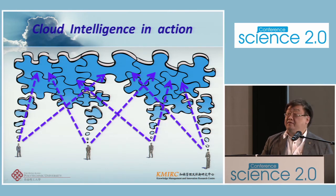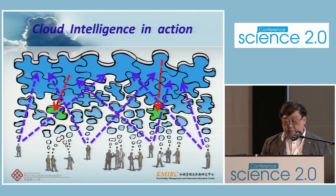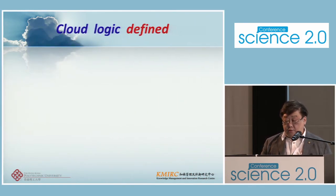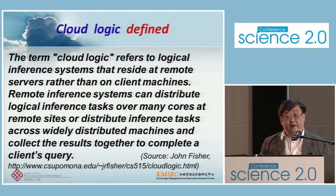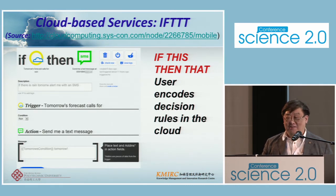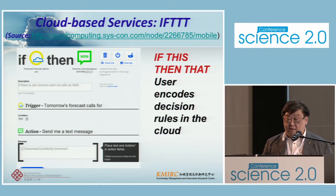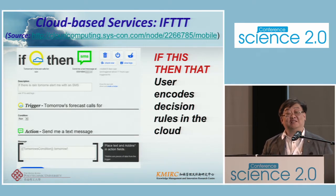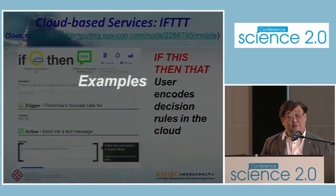Cloud logic can decompose a problem into sub-components to identify whether each sub-component is better handled by humans, machines, or a human-machine combination. Researcher John Fisher has defined this for cloud intelligence. For those who want to apply this now, there's commercial software like IFTTT — If This Then That — a simple business rule system in the public cloud. For example: if Hamburg's weather drops below two degrees centigrade, then send me an email or SMS. These are personal knowledge management tactics using business rules in the cloud.